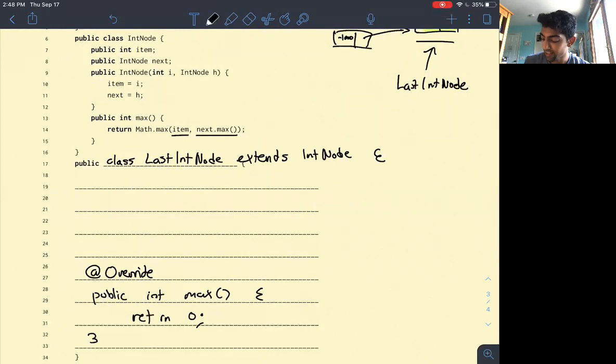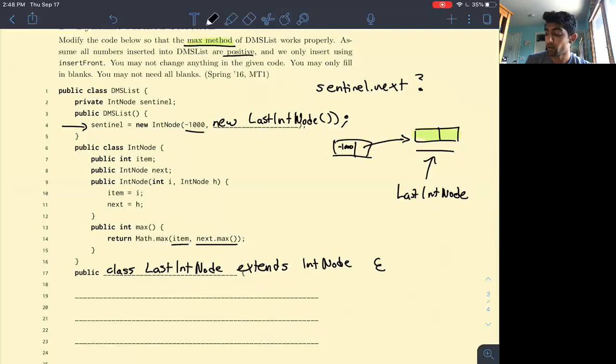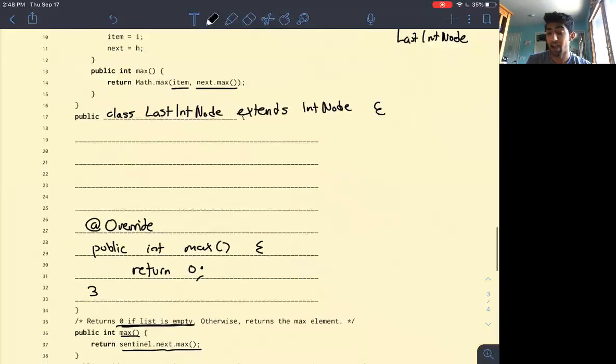is instead of calling the max function on the int node class, when we call sentinel.next.max, we'll use dynamic method selection to call the max function of the last int node class. I'm going to say this again because this is basically the crux of this problem.